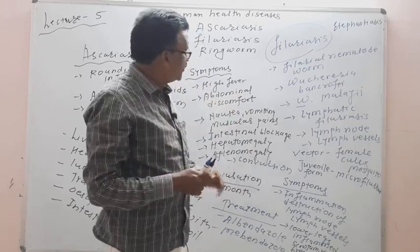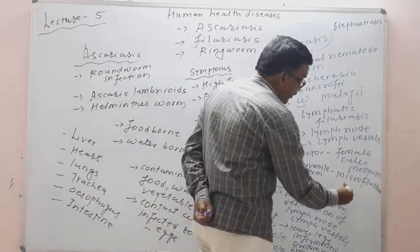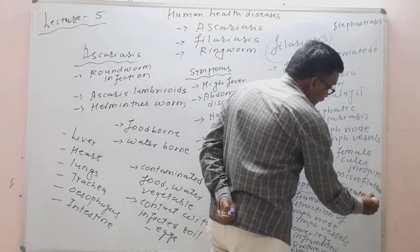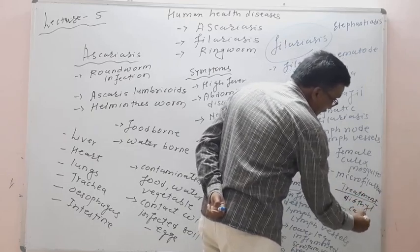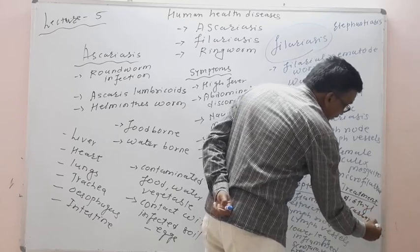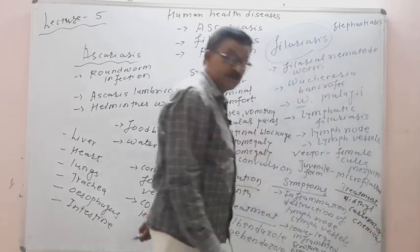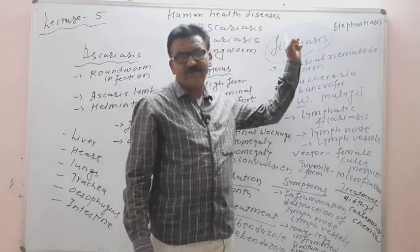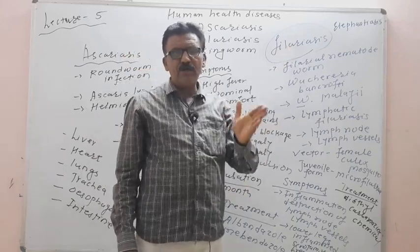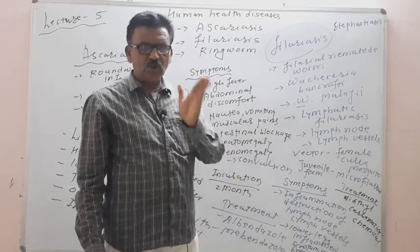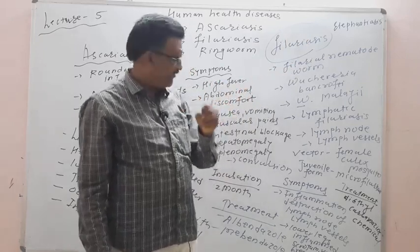The treatment for filariasis includes diethylcarbamazine, which is effective for this disorder. The incubation period is approximately one to two years, making it a slow-growth infection in the body.